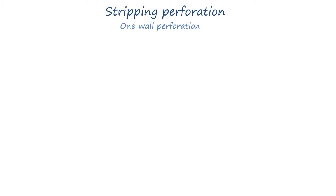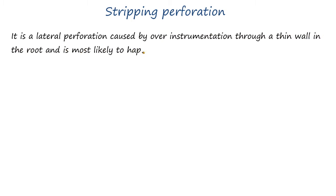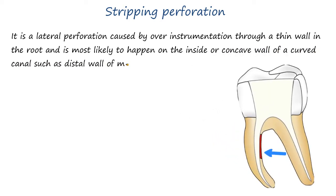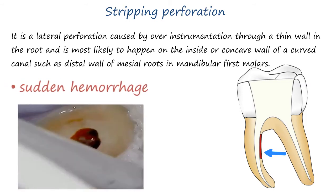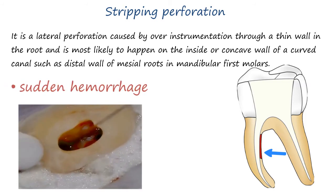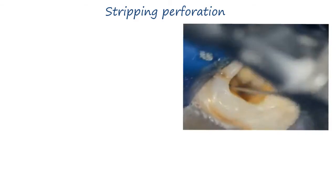Stripping perforation is a lateral perforation caused by over-instrumentation through a thin wall in the root, and is most likely to happen on the inside or concave wall of a curved canal, such as the distal wall of mesial roots in mandibular first molars. Stripping is easily detected by sudden appearance of hemorrhage in a previously dry canal, or by a sudden complaint by the patient.